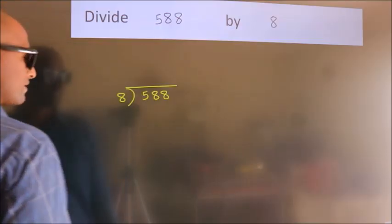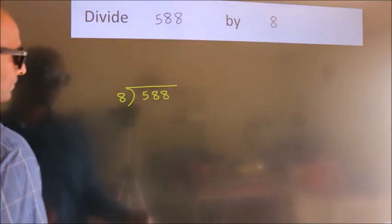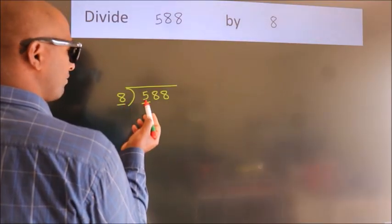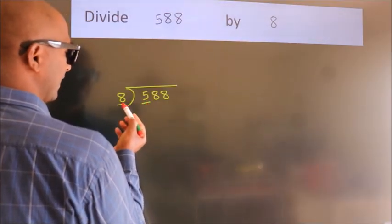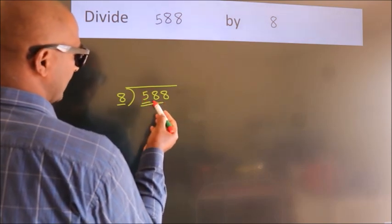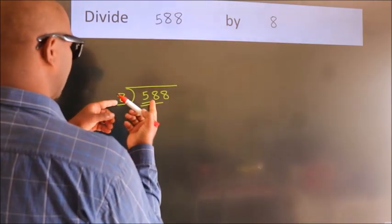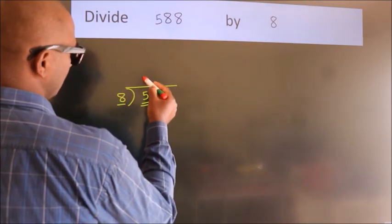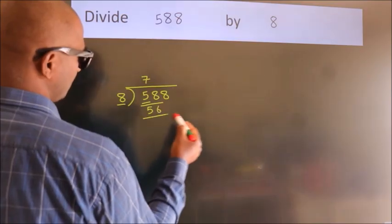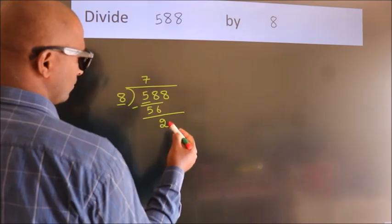This is your step 1. Next, here we have 5, here 8. 5 is smaller than 8, so we should take two numbers: 58. A number close to 58 in the 8 times table is 8 sevens 56. Now we should subtract. We get 2.